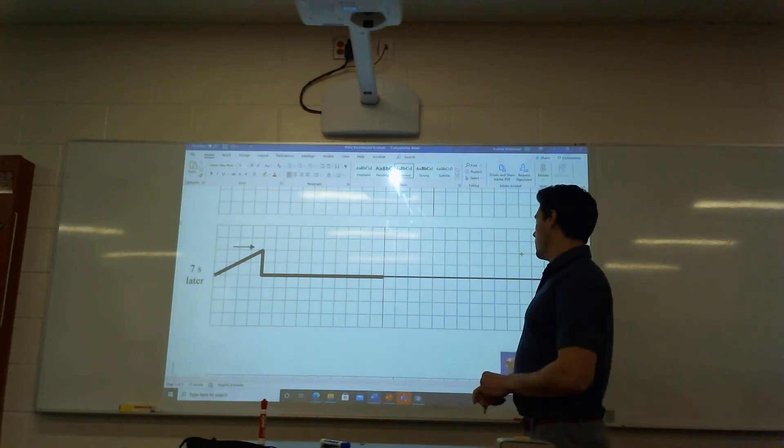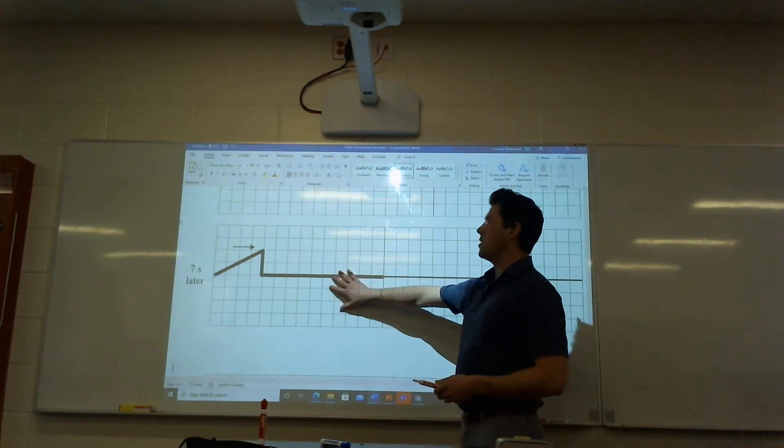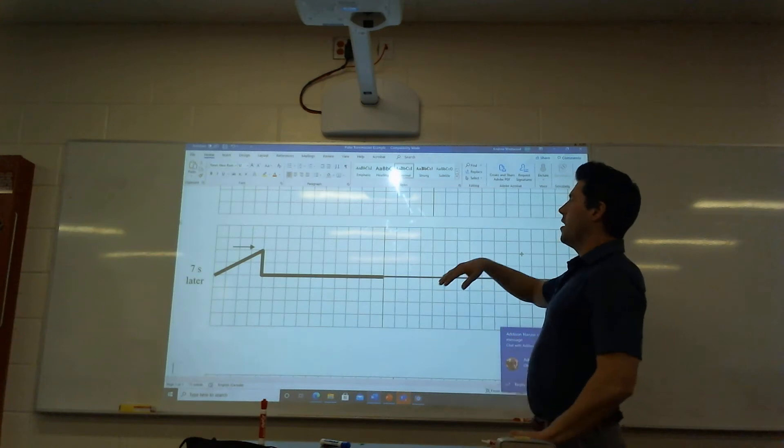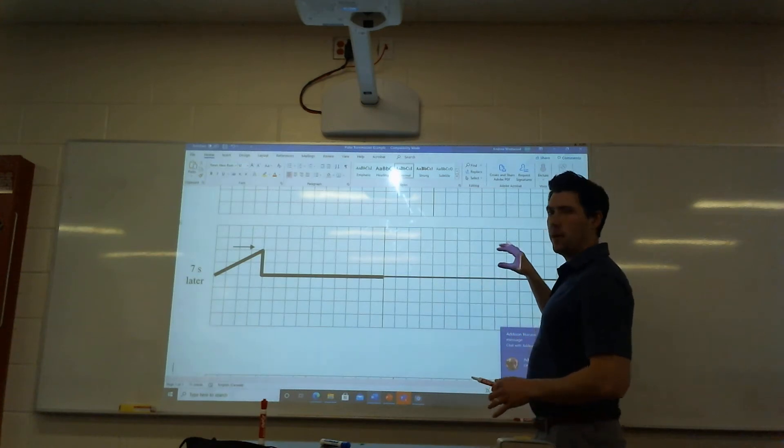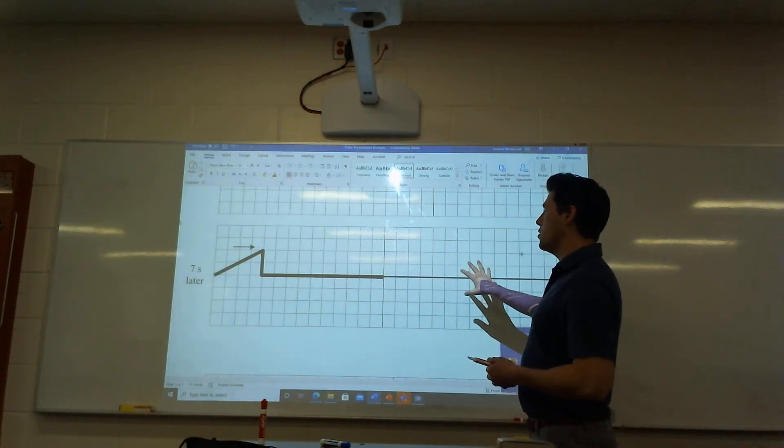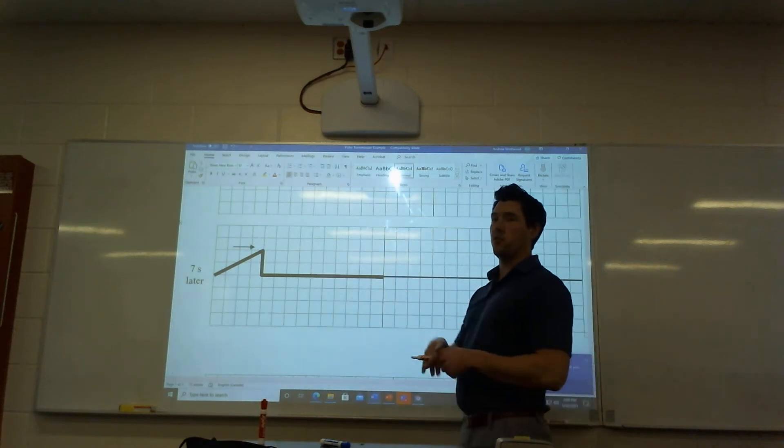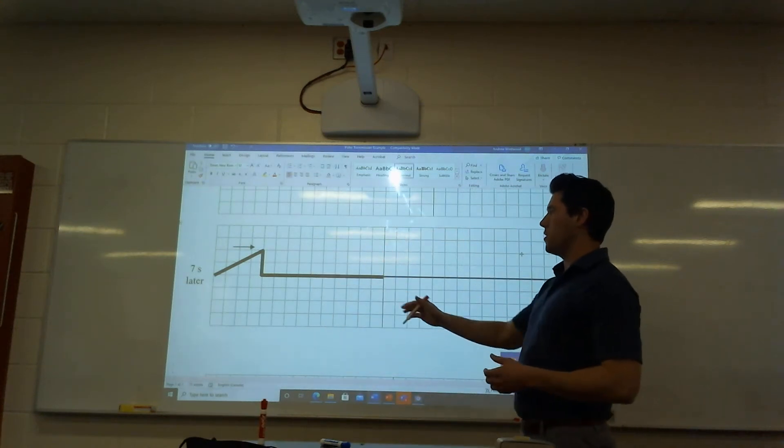Example two of our pulse transmission worksheet here. So again, just for a review, this time we're going to be having our more dense first, our less dense second. Again, the actual wave travels four units per second here, only two units per second here. That's just because wave travels slower in more dense things.